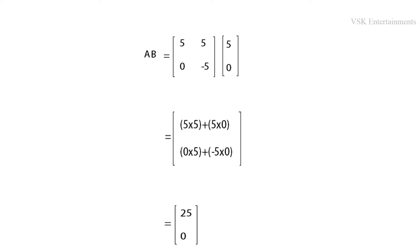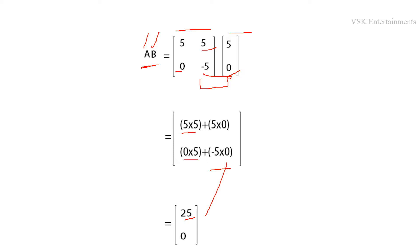From the given state equation, we already know matrices A and B. To find AB using matrix multiplication: 5×5 + 5×0 = 25, and 0×5 + (-5)×0 = 0. So AB = [25, 0]. Now we substitute into the QC formula: QC = [B, AB] = [[5, 25], [0, 0]].